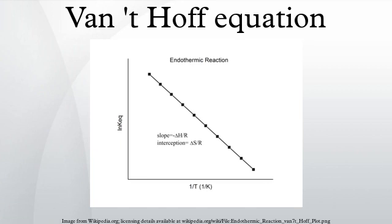A major use of the integrated equation is to estimate a new equilibrium constant at a new absolute temperature, assuming a constant standard enthalpy change over the temperature range. The definite integral between temperatures T1 and T2 gives an equation where K1 is the equilibrium constant at absolute temperature T1, and K2 is the equilibrium constant at absolute temperature T2.